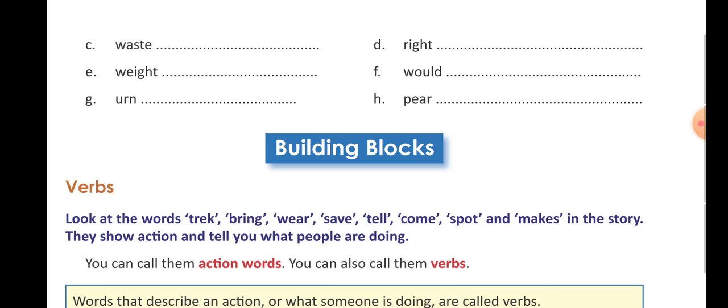G: U-R-N, 'urn' — the answer is E-A-R-N, 'earn'. And H: P-E-A-R, 'pear' — the answer is P-A-I-R, 'pair'. In this way, you will complete your Let's Try 3B.